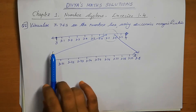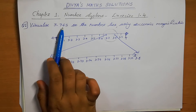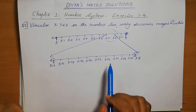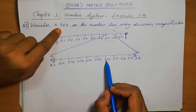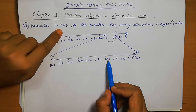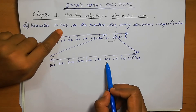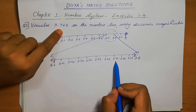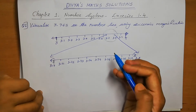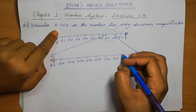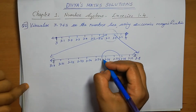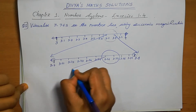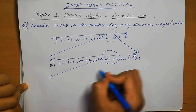Again we check: 3.765 comes between 3.76 and 3.77. So now we are going to enlarge the interval 3.76 and 3.77.